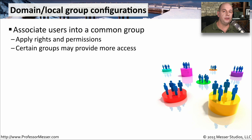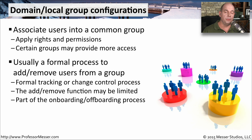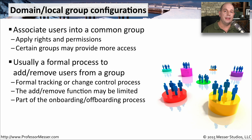It's very common on modern networks to assign users to particular groups and then assign rights and access to the group itself. That way, you can add and remove people from the group, which affects what type of access they have to different resources on the network. Because network access is often tied to a group, there's usually a formal change control process or tracking in place so you know exactly who was added to a group and when. Only certain users can make changes to those group databases, and this is often part of the onboarding or offboarding process.